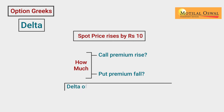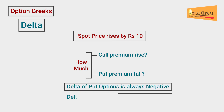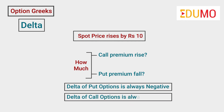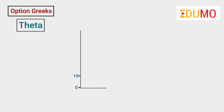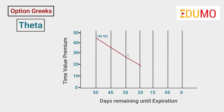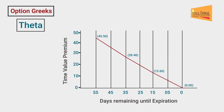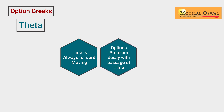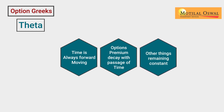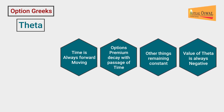The Delta of put options is always negative and the Delta of call options is always positive. Next is Theta. It measures an option's premium sensitivity to time. It basically measures the decay in options premiums with the passage of time and gives us a rupee value of decay per day. Time is always forward moving and options premiums decay with passage of time, with other things remaining constant. Hence, the value of Theta is always negative.